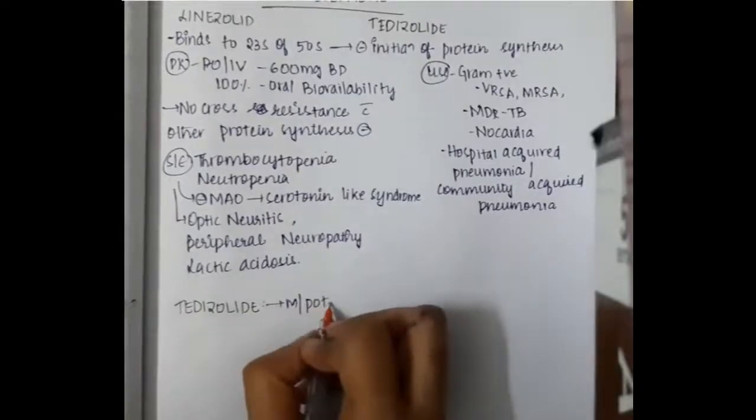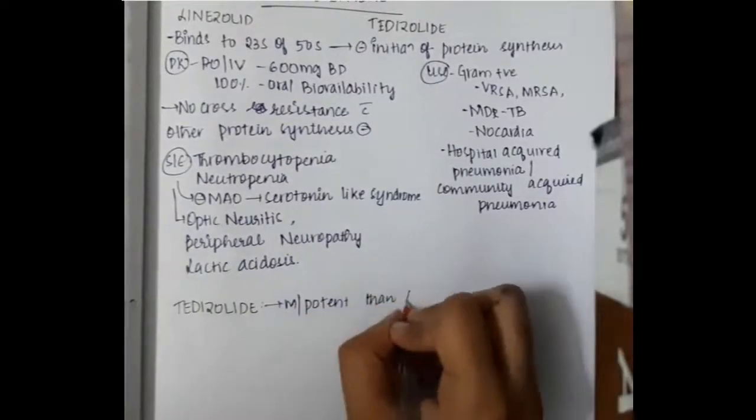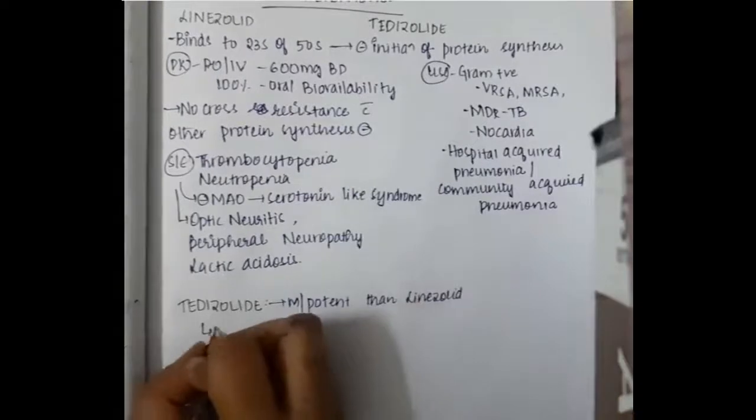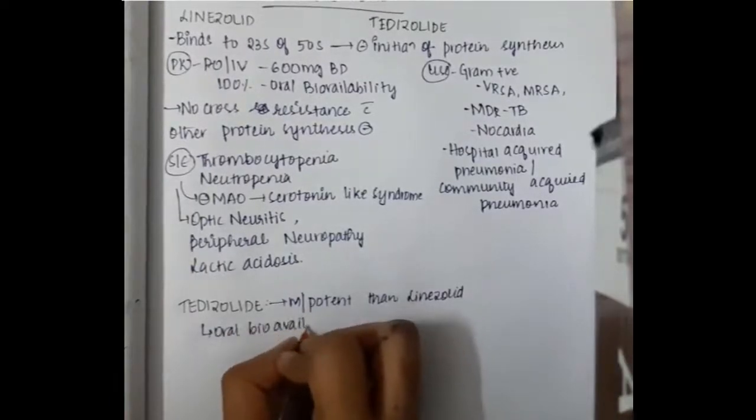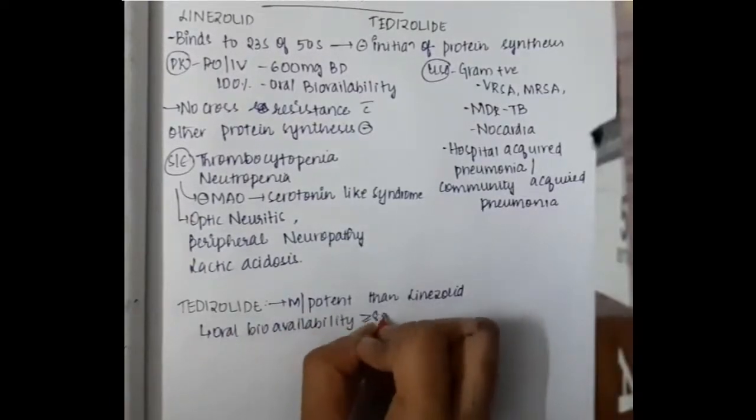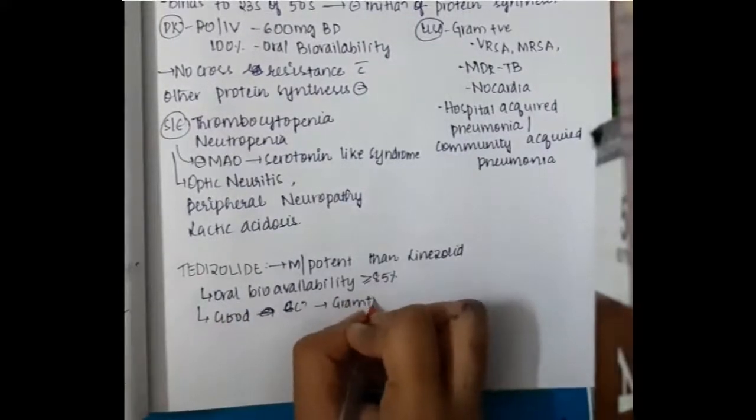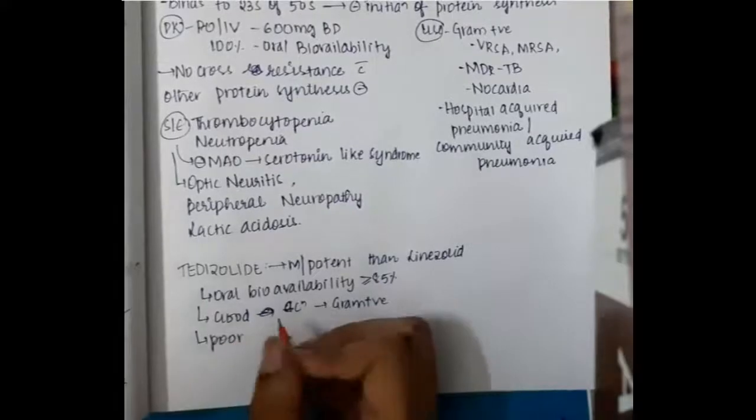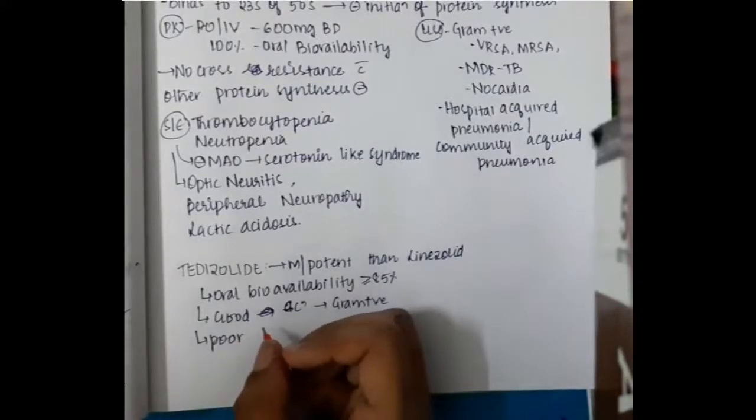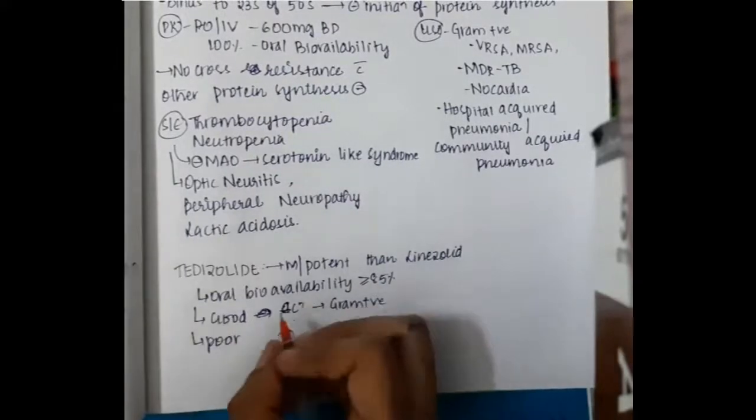Next, we have tedizolid. Tedizolid is more potent than linezolid with oral bioavailability of more than 85%. It has good action on gram-positive organisms and poor action on gram-negative bacteria and anaerobes.